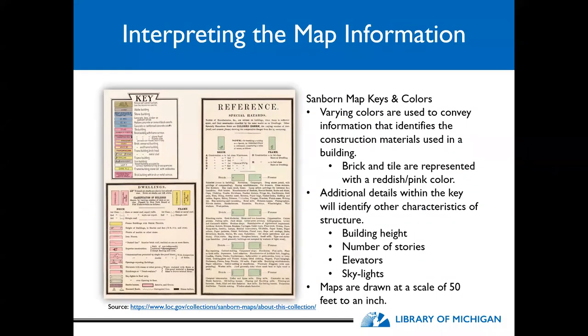How do we interpret these maps? Like all maps, Sanborn maps have their own keys and colors. Varying colors are used to convey information identifying the construction materials used in a building — for example, brick and tile are represented with a reddish pink color. Additional details within the key will identify other characteristics of the structure, including building heights and number of stories, elevators if the buildings had them, and skylights. Maps are drawn at a scale of 50 feet to an inch.